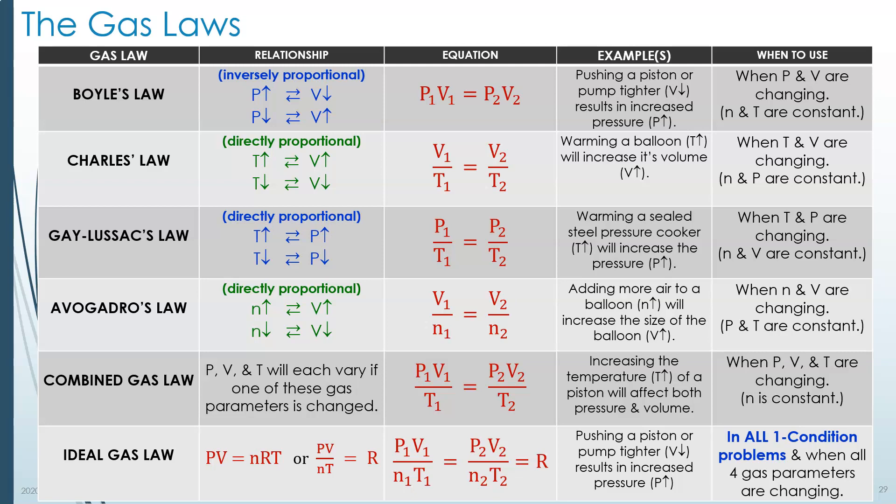Now, in Chem 100, you are only responsible for Boyle's Law on exams, and Boyle's Law and Charles' Law on the lab. So we're not going to go over the others, but I want you to notice the formula under equation in the last row, ideal gas law: P1V1 over N1T1 equals P2V2 over N2T2. Forget the equals to R for your purposes. You won't use it.